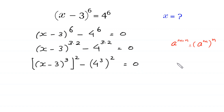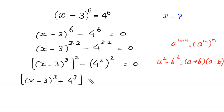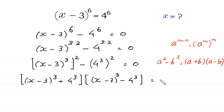Now, according to the algebraic identity a² minus b² is equal to (a plus b)(a minus b), this expression [(x minus 3)³]² minus [4³]² can be factorized as [(x minus 3)³ plus 4³] times [(x minus 3)³ minus 4³] is equal to 0.